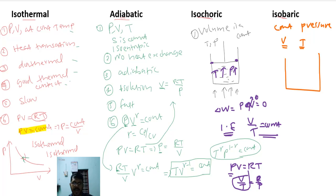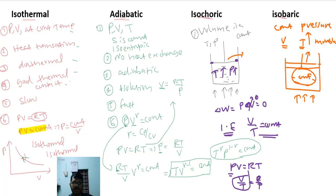Now the piston is movable — previously it was immovable. When heat is added, temperature increases, pressure starts to increase, but since the piston is movable, it moves to a new position such that the pressure inside the cylinder remains constant. So volume increases while pressure stays constant. This is an example of an isobaric process.